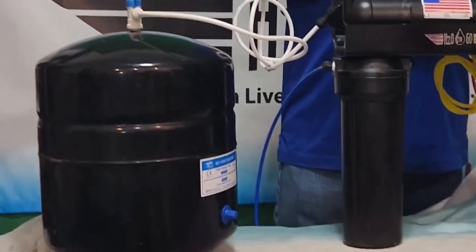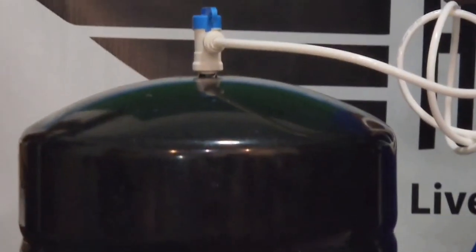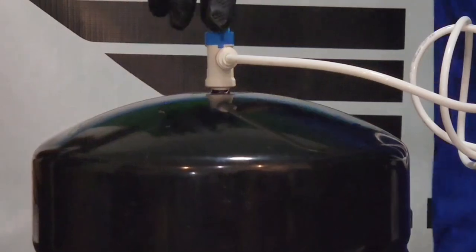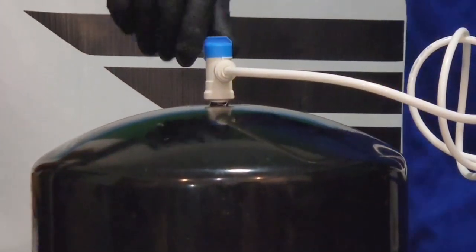To get started, you want to turn off the water. There's two valves to turn off the water. The first one is on top of the holding tank. You simply turn it a quarter of a turn, and it's off.